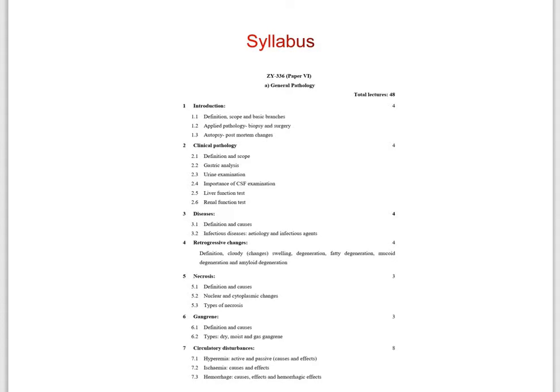The third chapter is disease, covering definition, causes, infectious disease, its etiology and infectious agents. Now the fourth chapter is retrogressive changes. It covers the definition of retrogressive changes, then cloudy swelling, degeneration, fatty degeneration, mucoid degeneration, and amyloid degeneration.